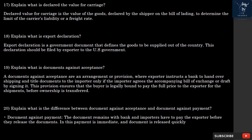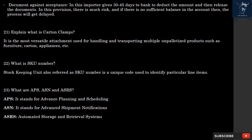Question 20: What is the difference between Document Against Acceptance and Document Against Payment? In Document Against Payment, the document remains with the bank and importers have to pay the exporter before the documents are released — payment is immediate and documents are released quickly. In Document Against Acceptance, the importer is given 30 to 45 days for the bank to deduct the amount and then release the documents. There is more risk in this provision, and if there is insufficient balance in the account, the process will be delayed.